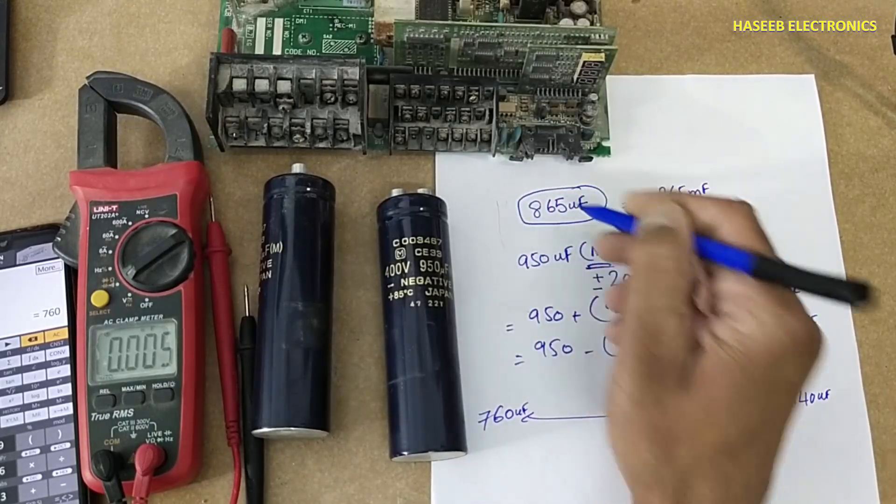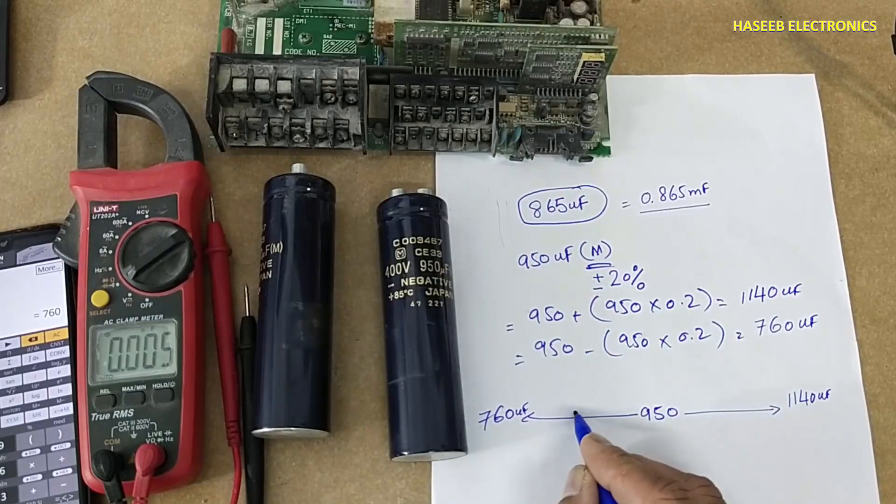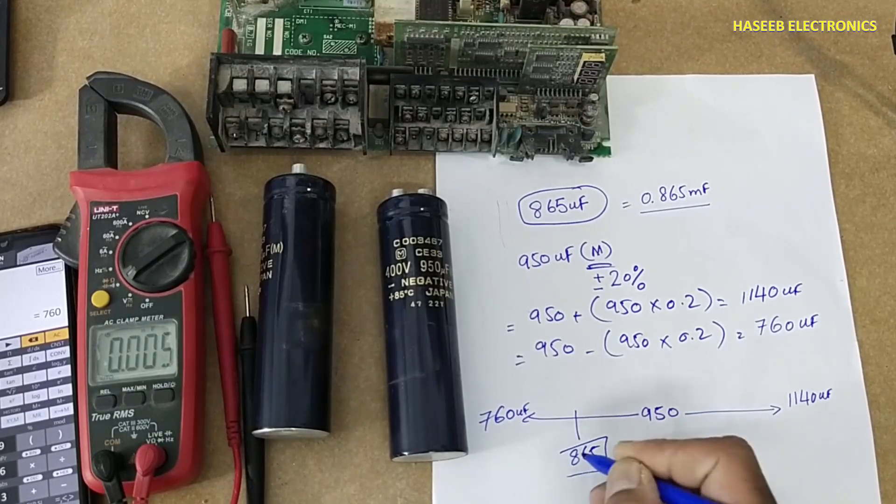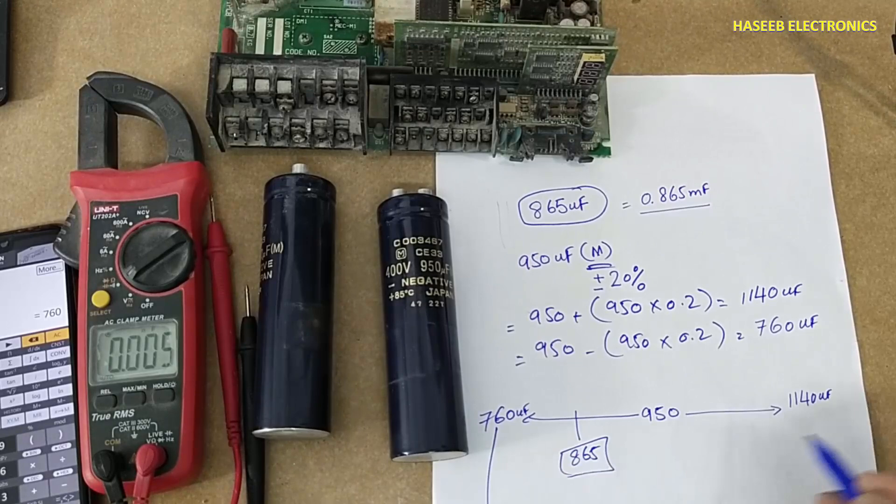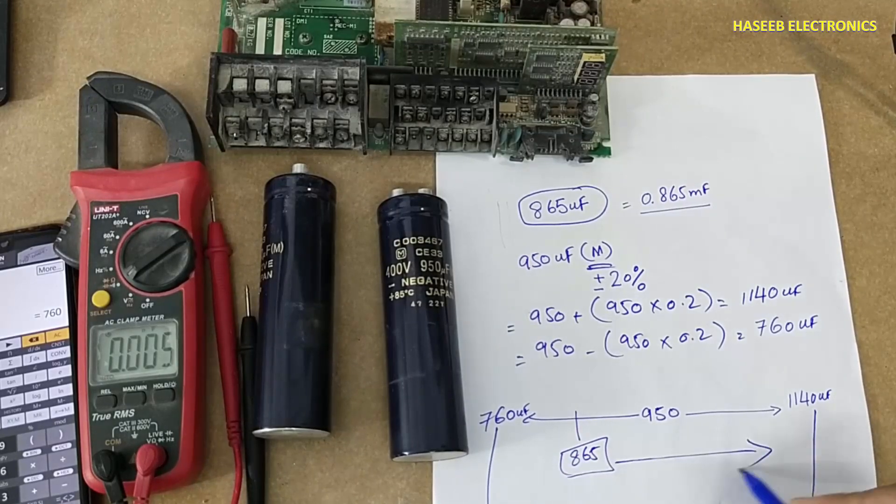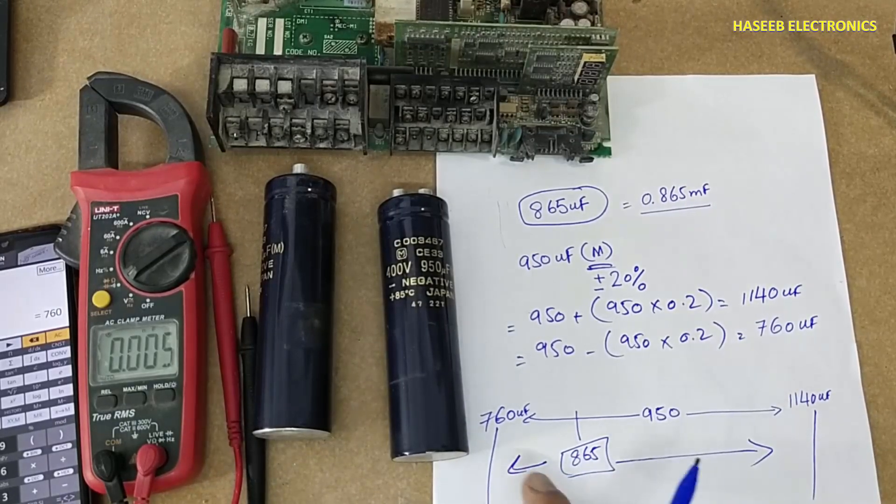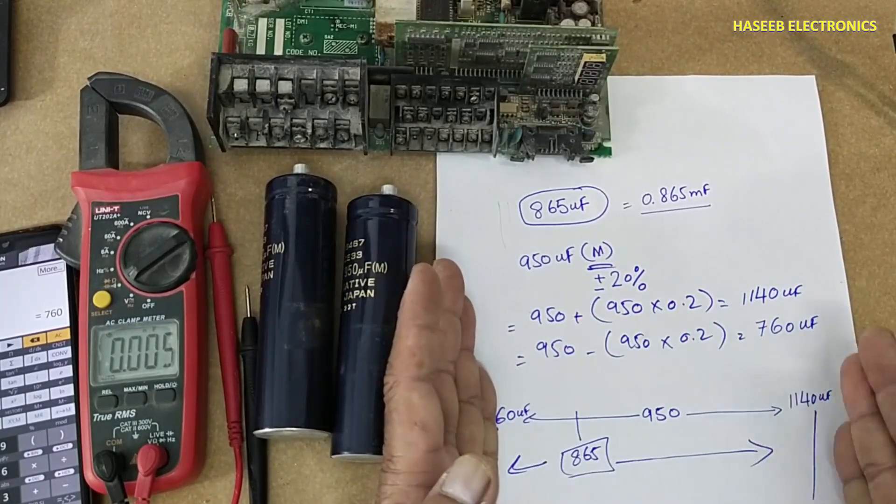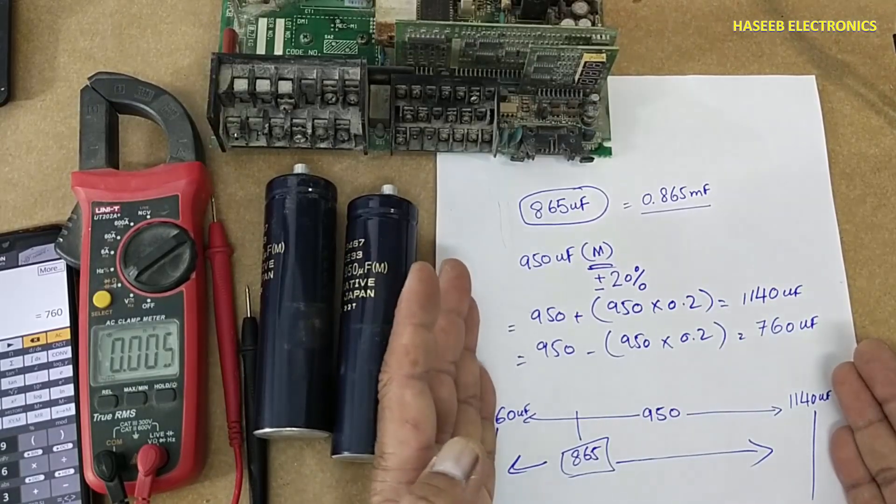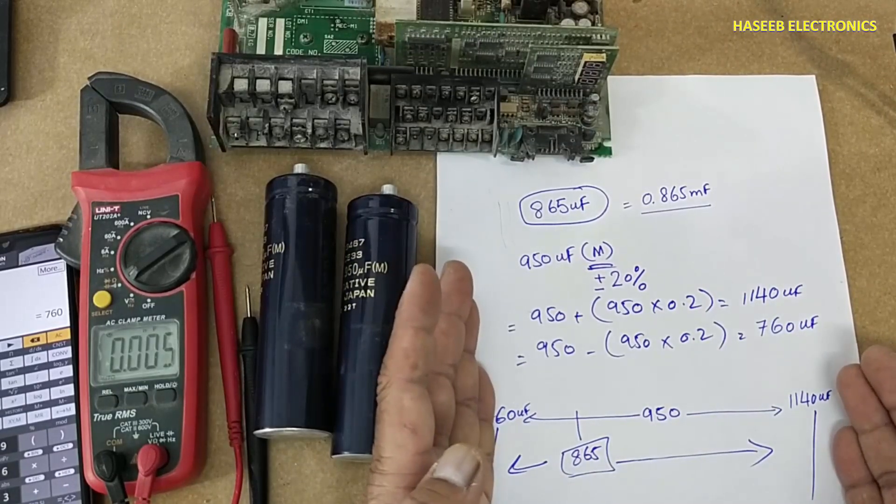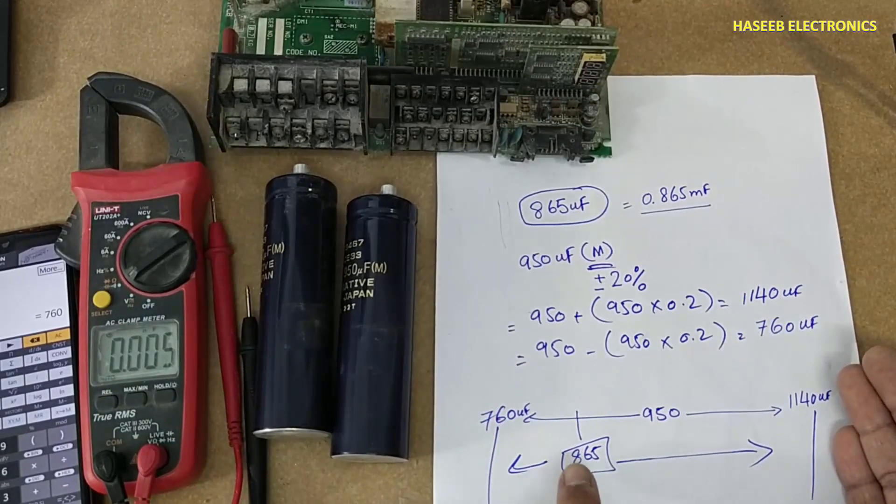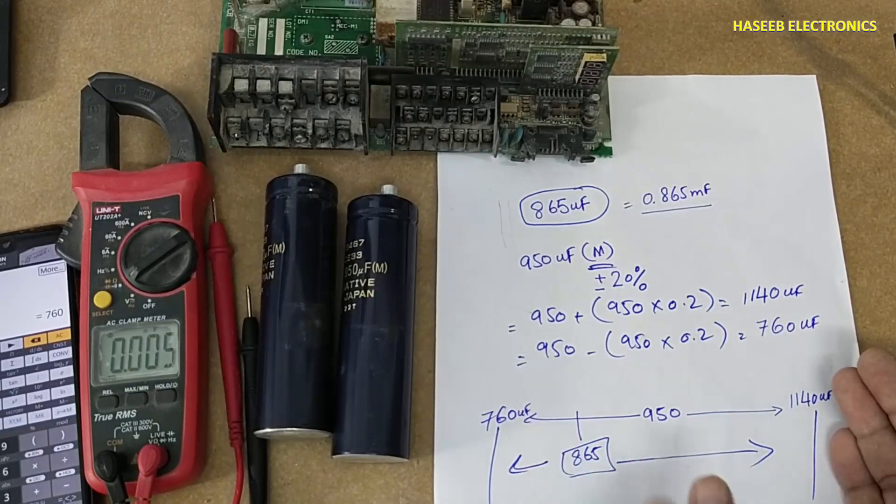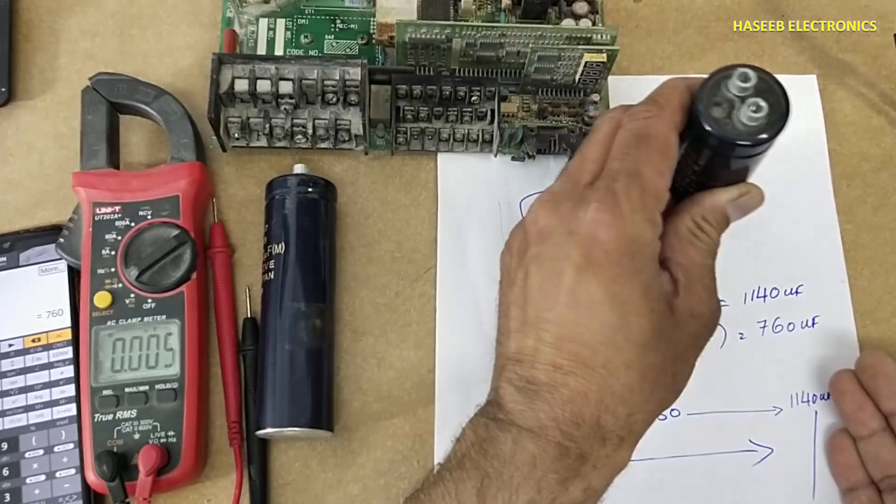Our value is 865, that is in between these two values. So if any capacitor is measured between these two limits, upper limit and lower limit, that capacitor will be considered good. So 865, that is within range. We can say this capacitor is good.